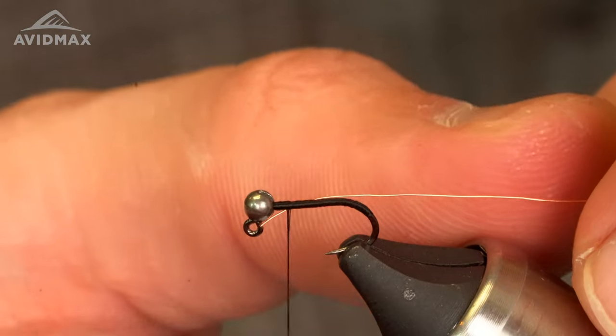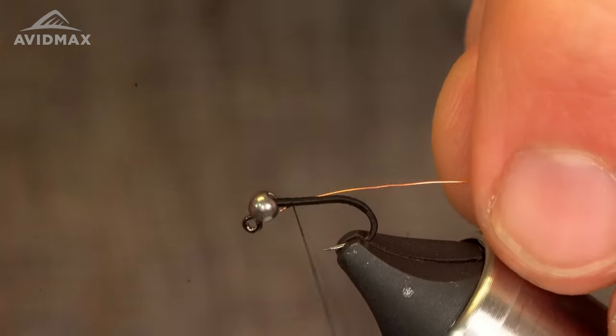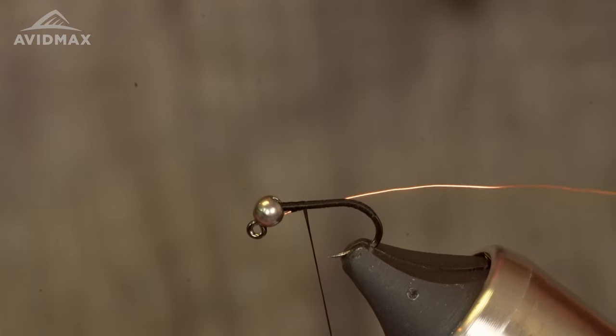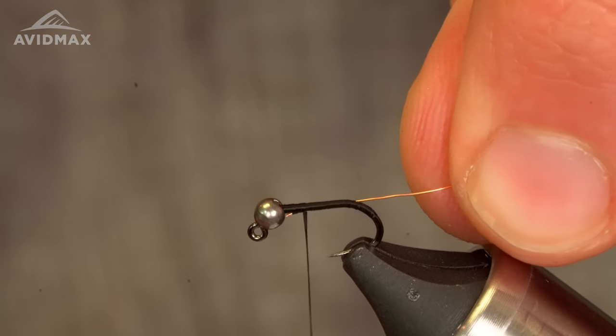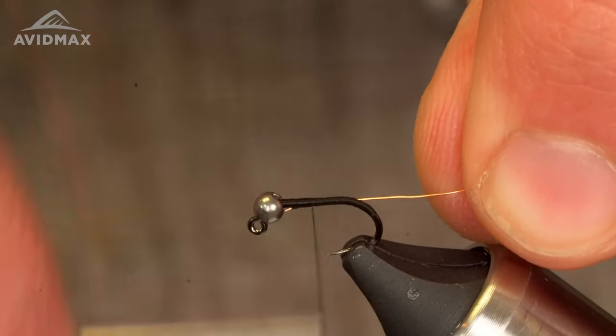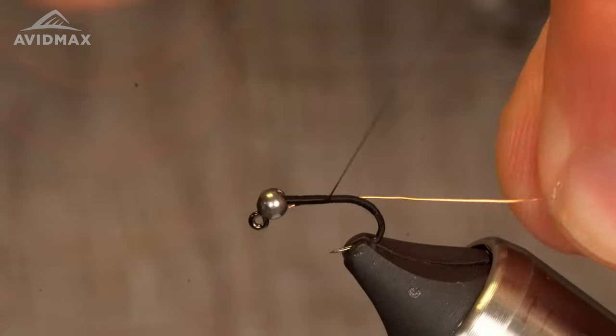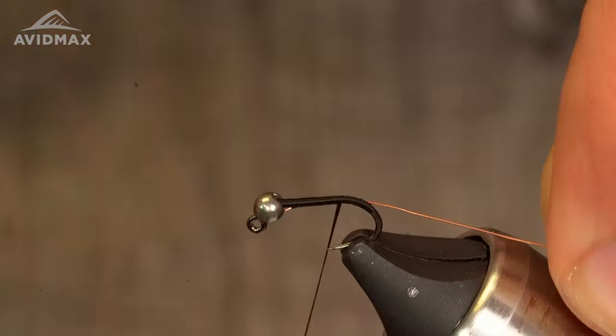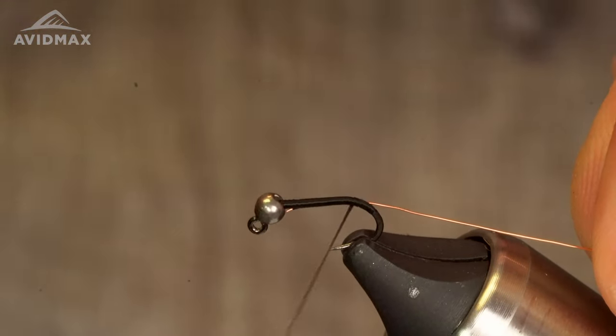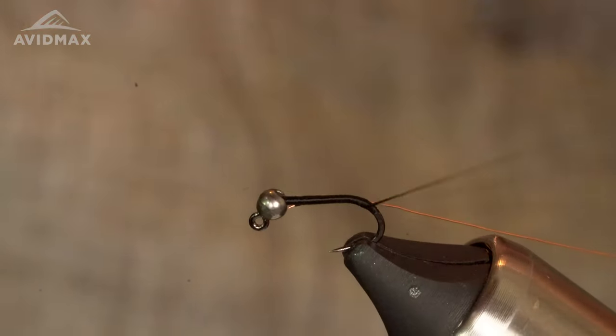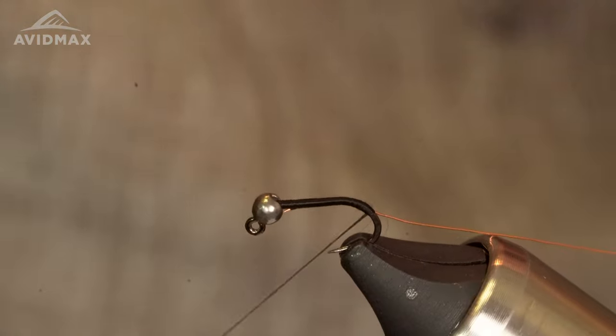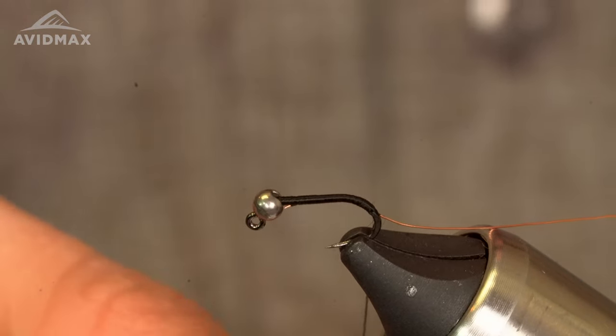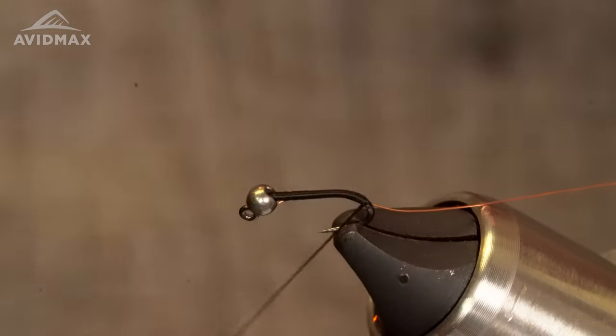Secure the wire with a wrap, pull it back right to where we need it, start going. Give your bobbin a little whirl, make sure your thread is still coming out relatively flat. Keep good tension on that wire, it'll keep it from getting all squiggly along the hook shank as you're tying it back. Give the bobbin a spin again, keep that thread flat.